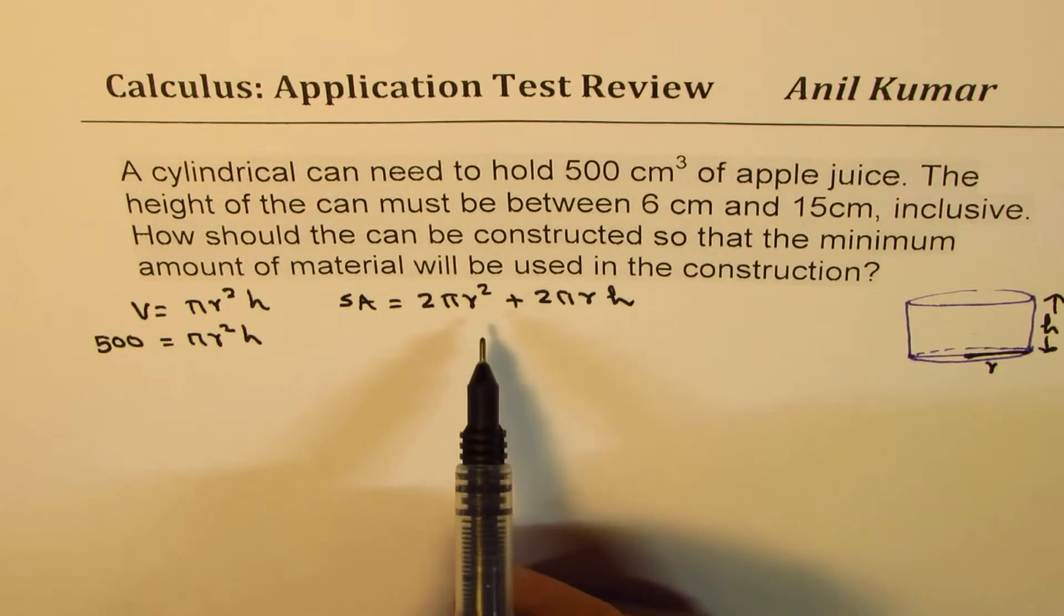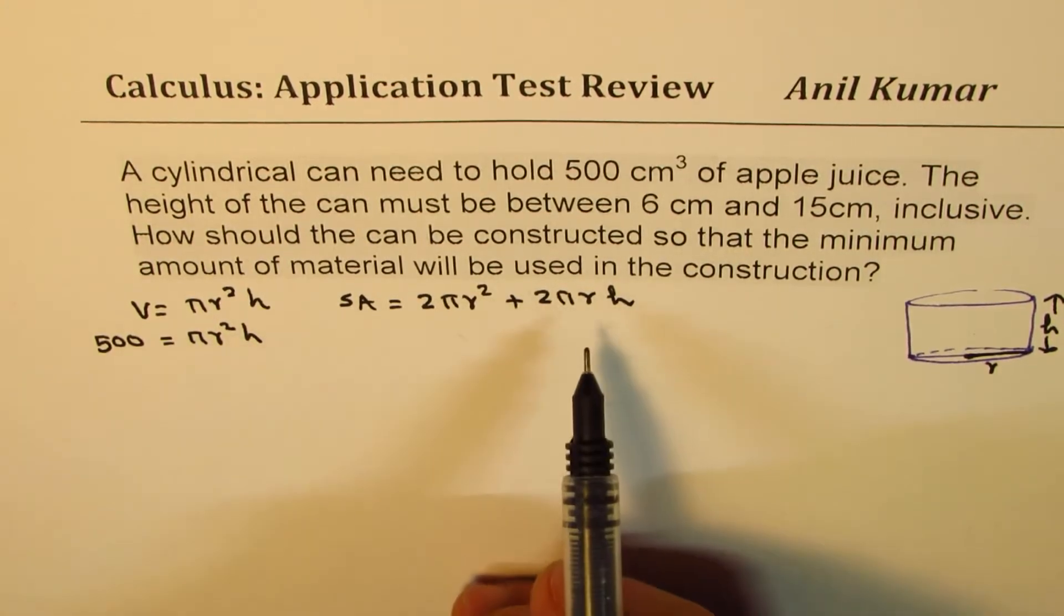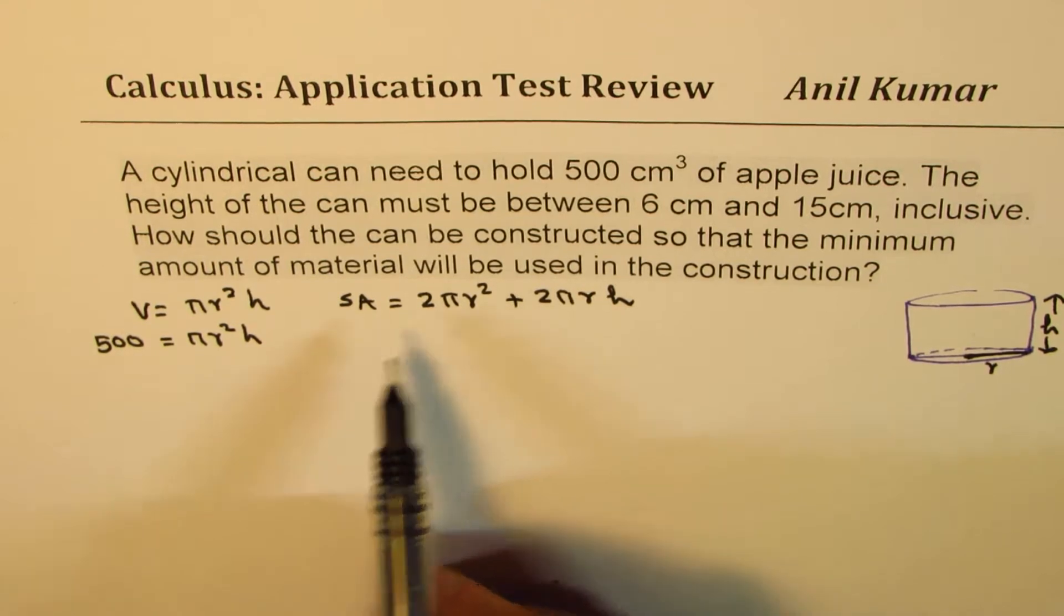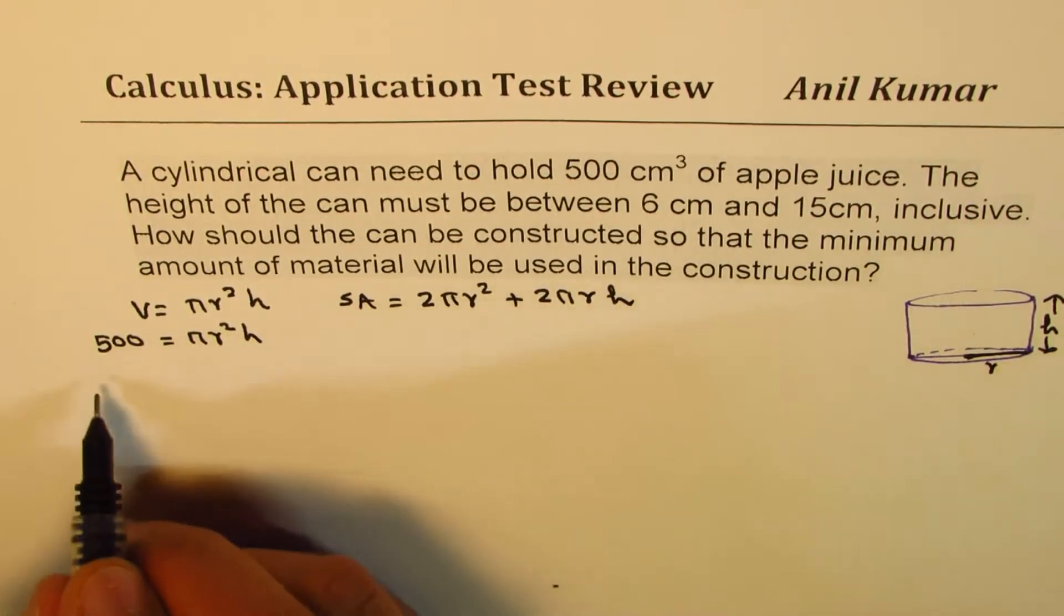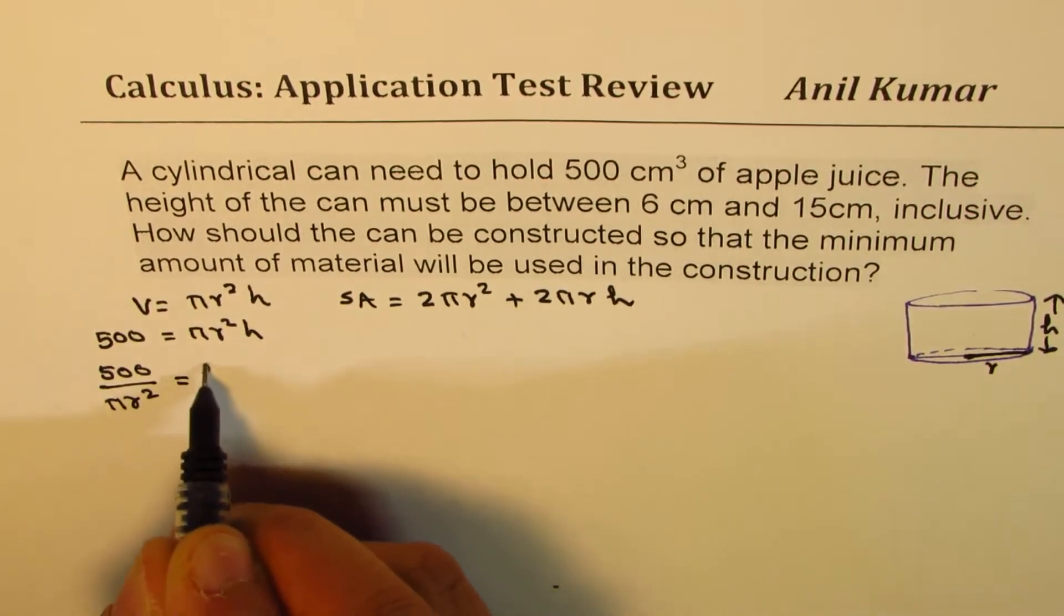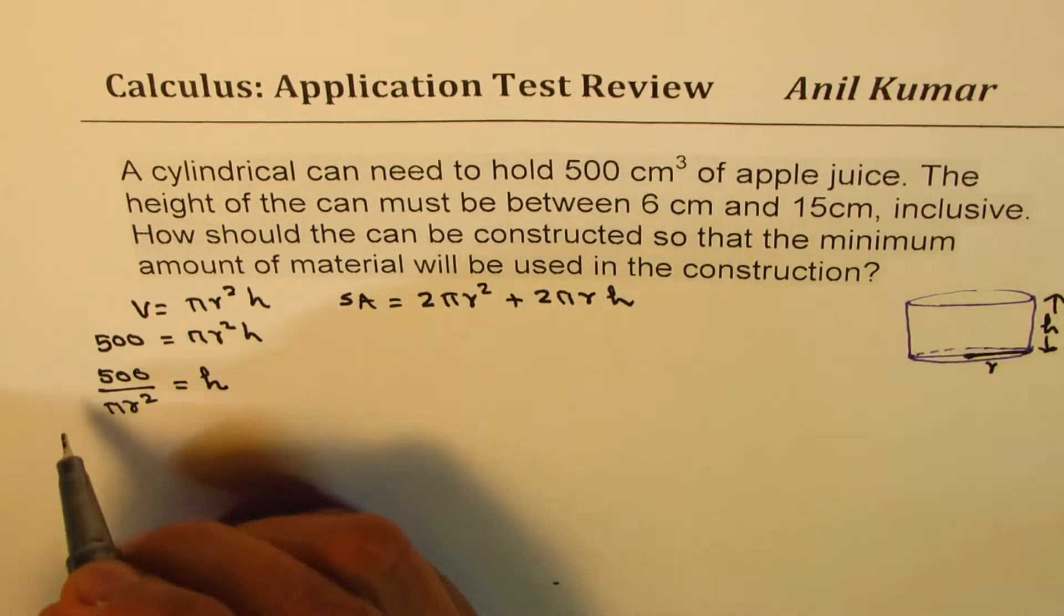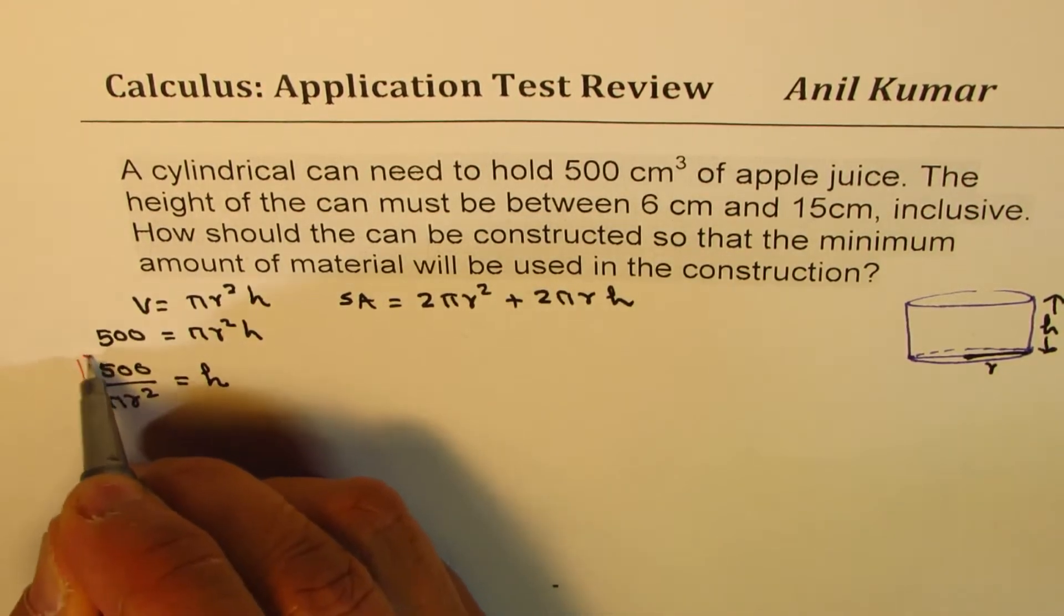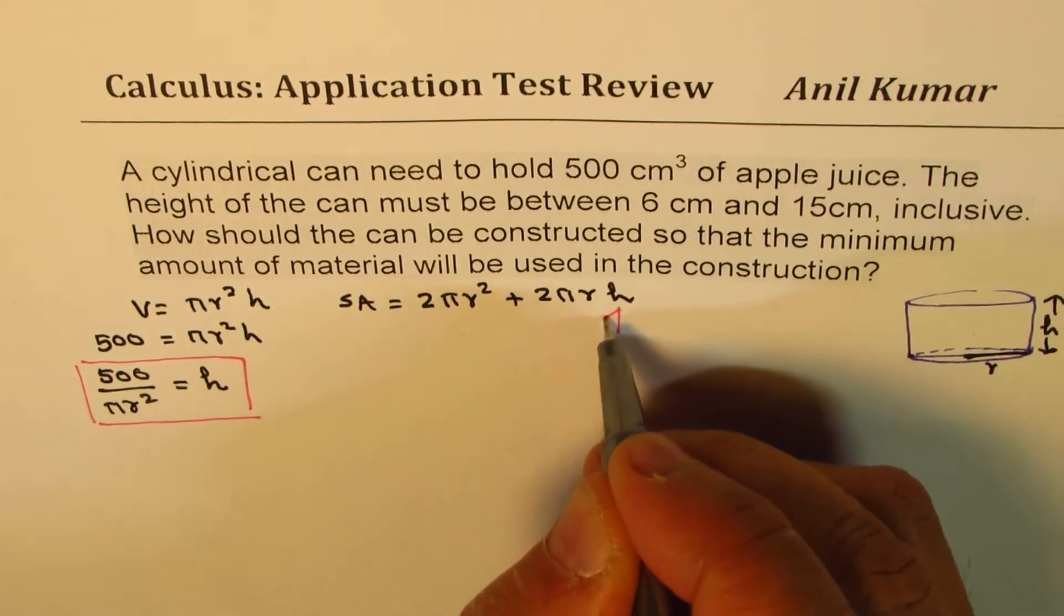Now I would prefer to write height in terms of radius and then we'll work it out. If I write r in terms of height, I get square root term. I want to avoid that. So I can write this as 500 over πr² equals height. So that is how we are going to relate height with the radius. And I'm going to substitute this value here.